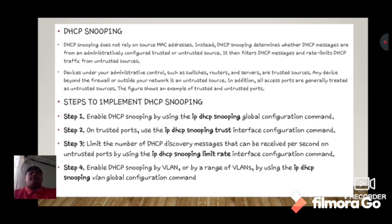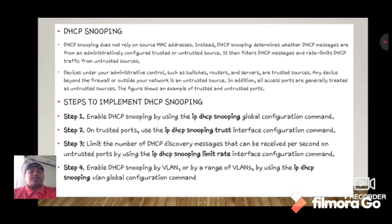DHCP snooping. DHCP snooping does not rely on source MAC addresses. Instead, DHCP snooping determines whether DHCP messages are from an administratively configured trusted or untrusted source. It then filters DHCP messages and rate-limits DHCP traffic from untrusted sources.